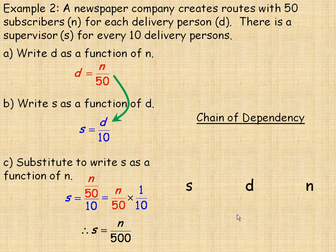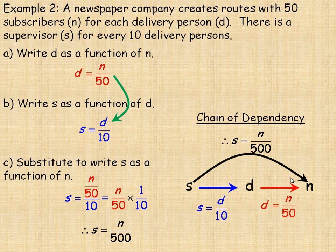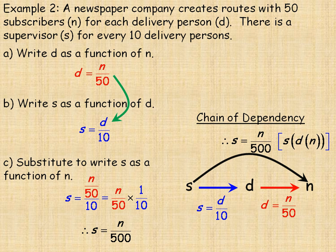To summarize the chain of dependency: d as a function of n gives the number of delivery people in terms of subscribers; s as a function of d gives supervisors in terms of delivery people. In part c, we bypassed d and wrote s in terms of n — how many supervisors are needed for any number of subscribers. This can be written as s of d of n, because d depends on n and s depends on d, so s also depends on n intermediately.